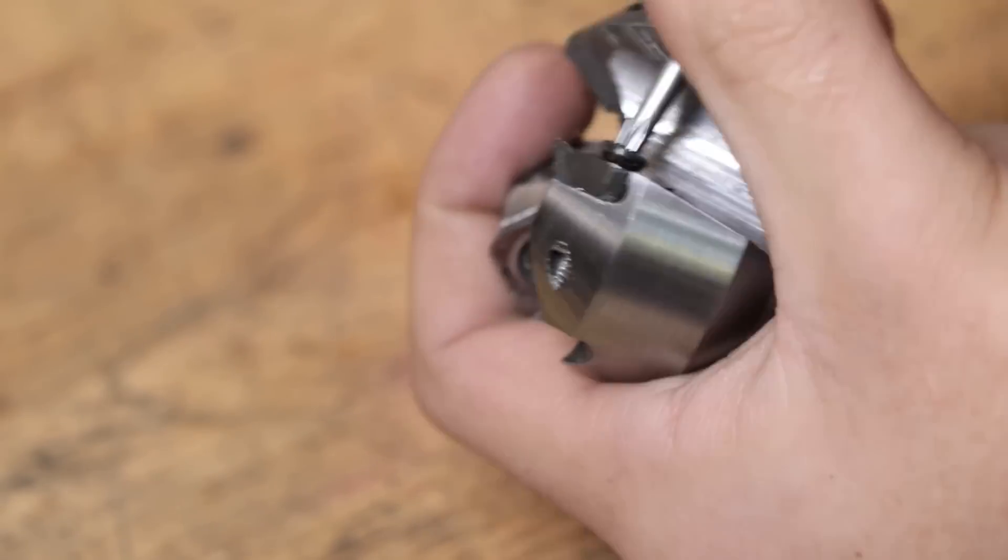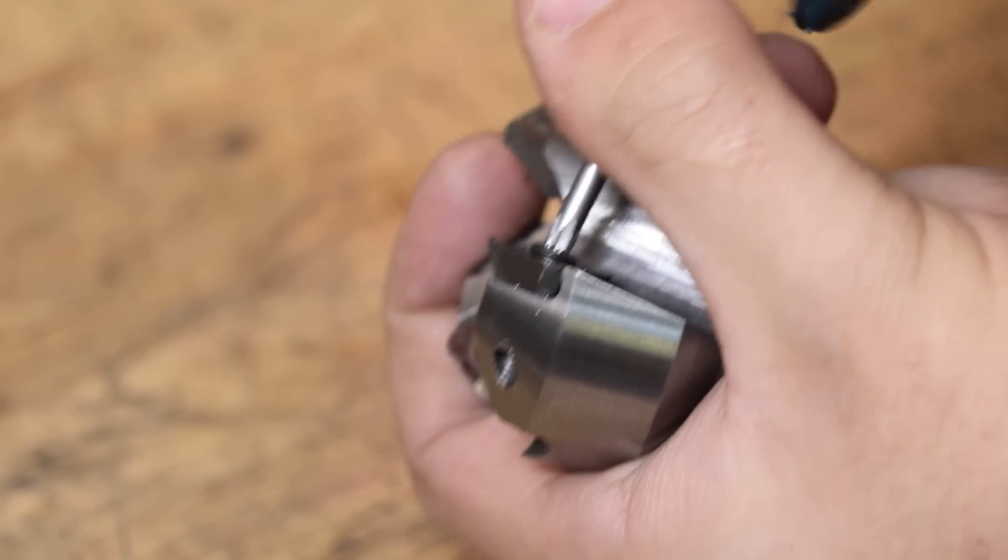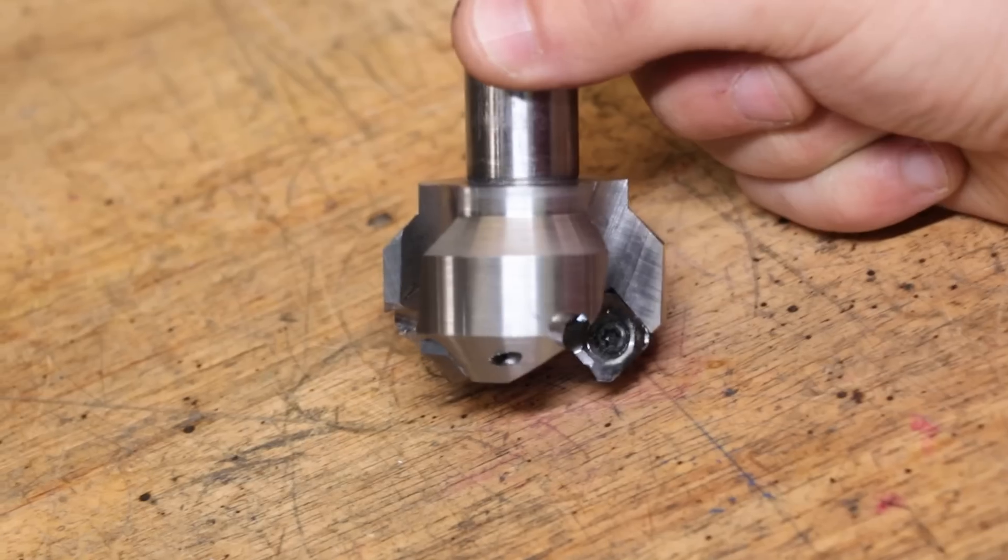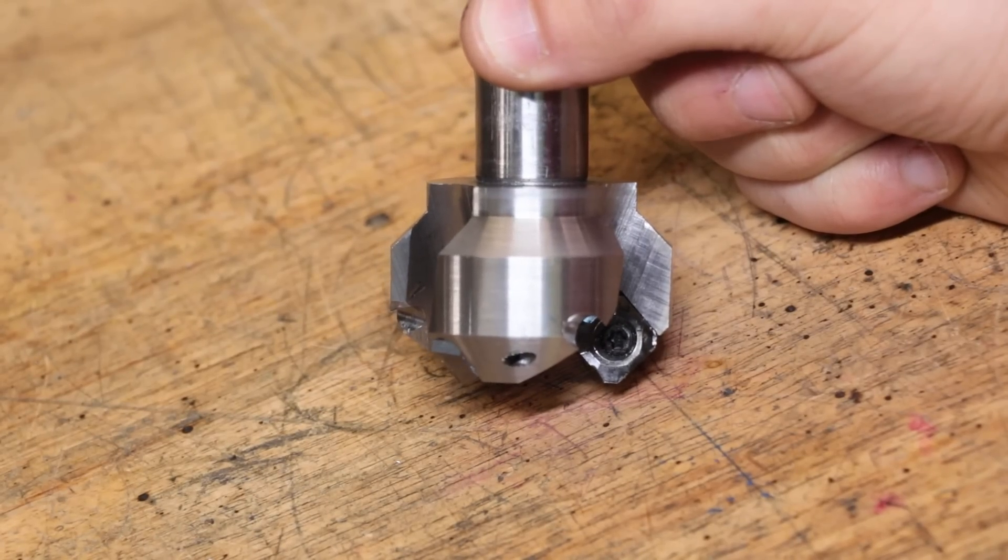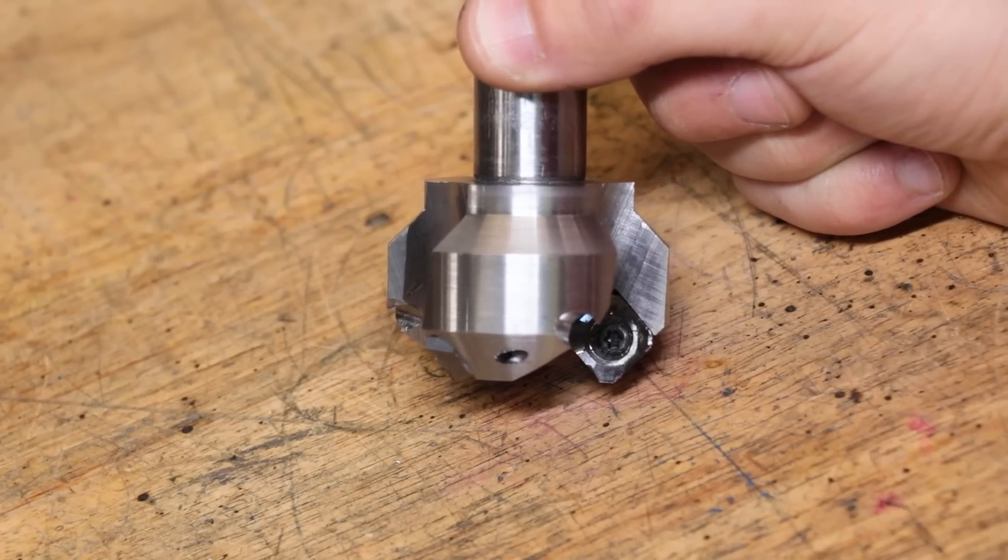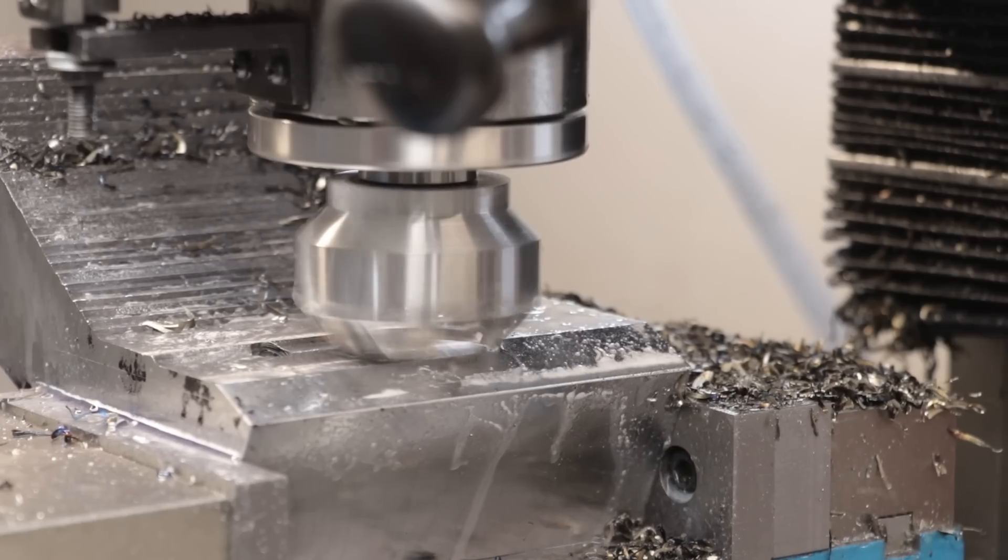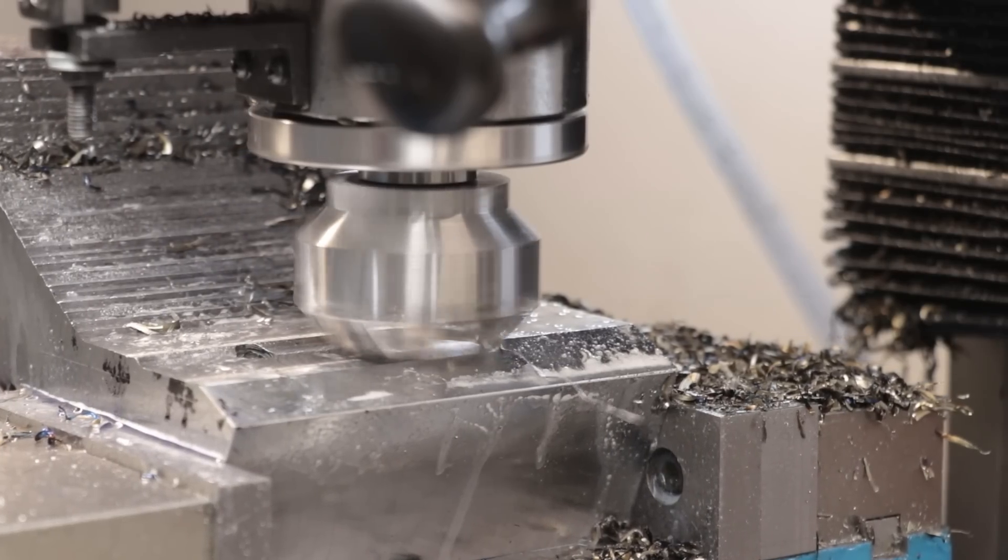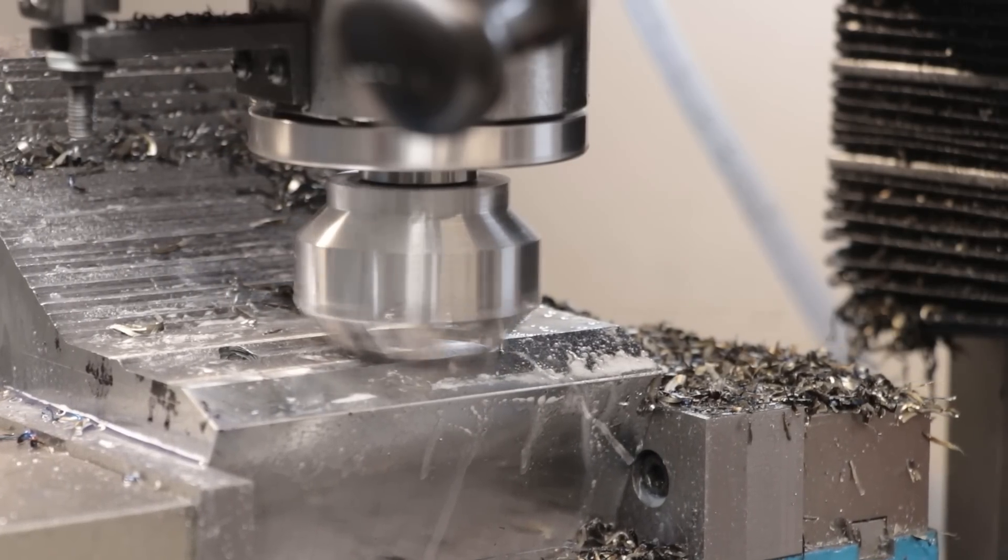The only real downside to this tool is that you can't machine up to a hard corner. It always leaves a 45 degree chamfer, and that sometimes is a bit of an issue. However, the fix should be pretty simple, and by simple I mean just make another one.